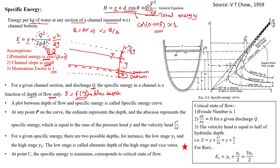A plot drawn between depth of flow y and specific energy E is called a specific energy curve, as shown on the right side of the slide. This specific energy curve consists of one 45-degree line and the specific energy curve. For a different discharge Q, there is one specific discharge curve. If the discharge varies, the specific energy varies and the corresponding curve will shift either to the right or left. For greater discharge it moves outward; for lesser discharge it moves towards the origin.